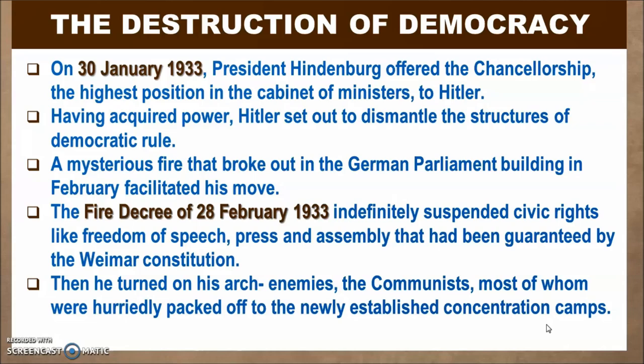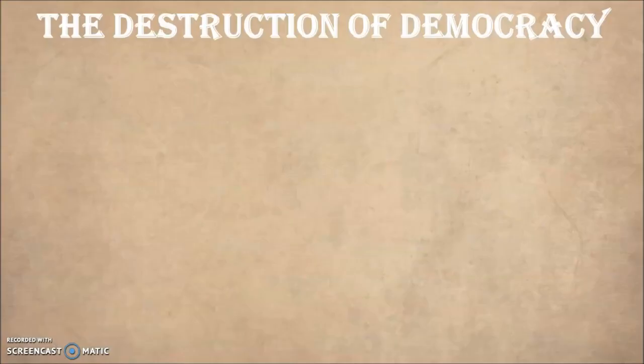Concentration camps were places where Hitler started a program of mass killing. He divided people into desirable and undesirable categories. Those who were undesirable — like the communists — were sent to concentration camps, and from there to gas chambers where they were killed. We will discuss this further in the later part of the video.